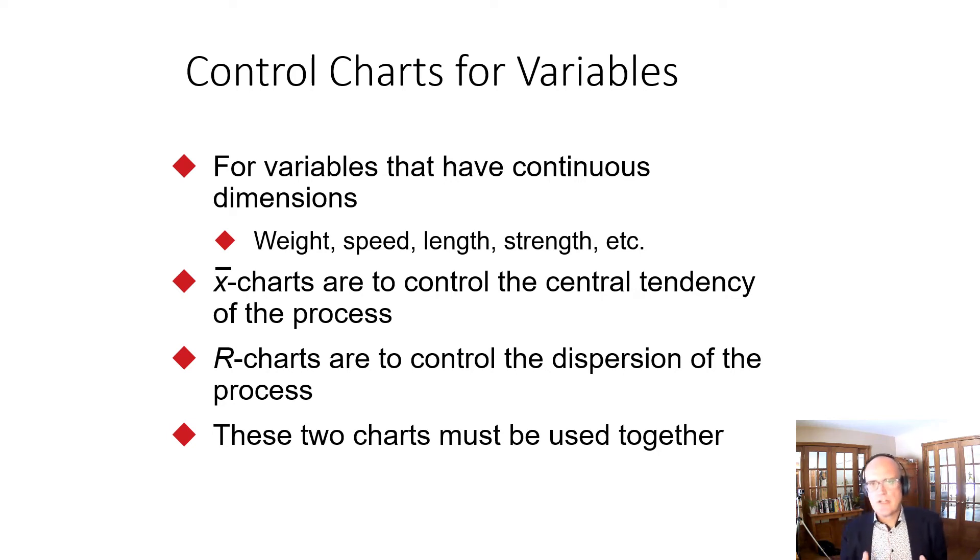We've gone through an introduction of quality in the context of operations management and talked about some of the tools that are available for operations managers to manage quality. One of the ones we talked about was statistical process control, which is a rigorous tracking metric that allows us to evaluate whether we are meeting our expectations in producing products or services or whether we are out of control.